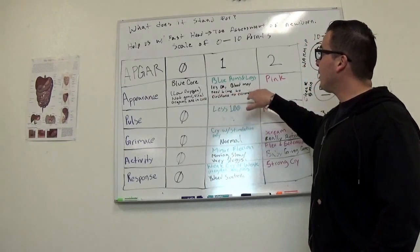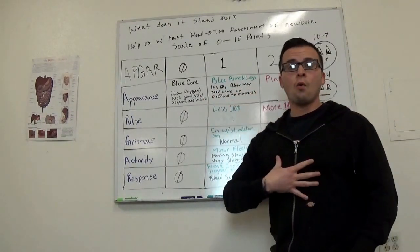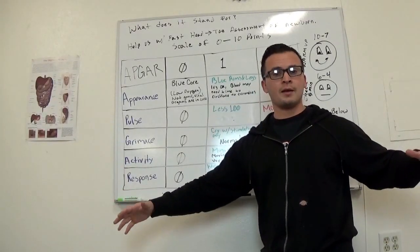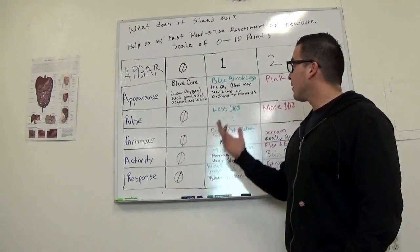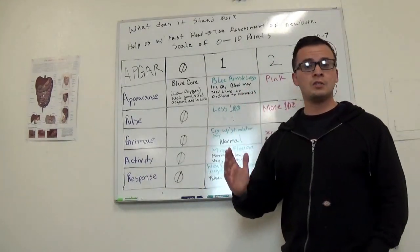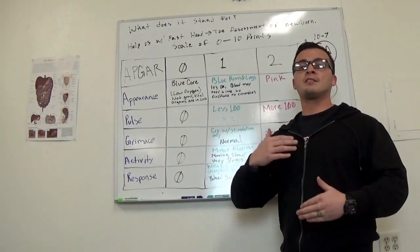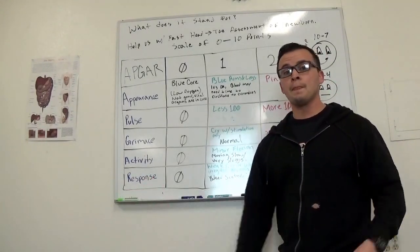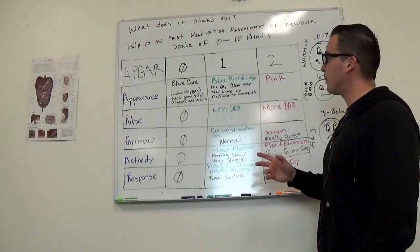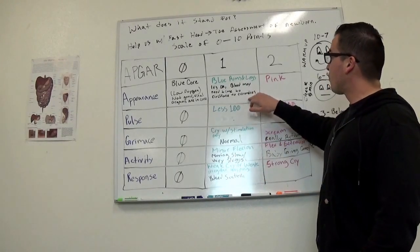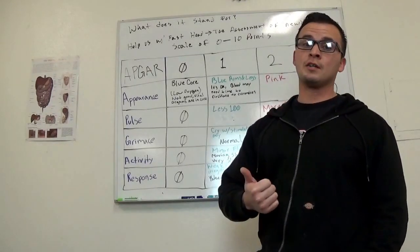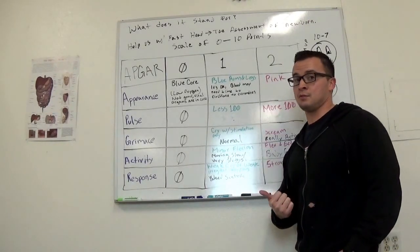If your baby has a good core, it's a good pinkish color maybe, but the extremities are blue cyanotic, they get a 1. That's pretty normal. It's not a huge deal. Maybe the blood just needs time to circulate and get to the extremities. Please take a note and check the baby again. If your baby is pink all the way around, that's good. They get a 2. That's really good. That means that baby has good perfusion.